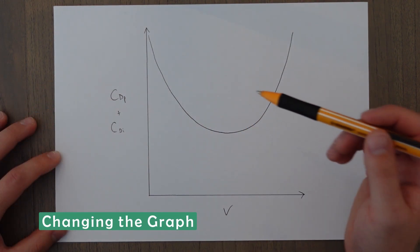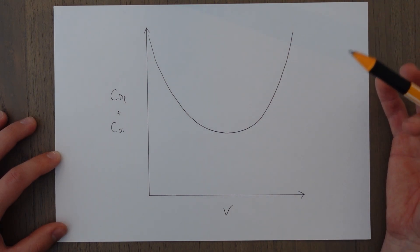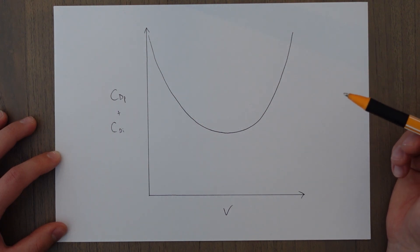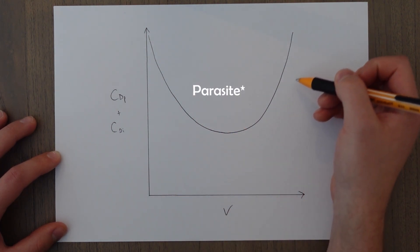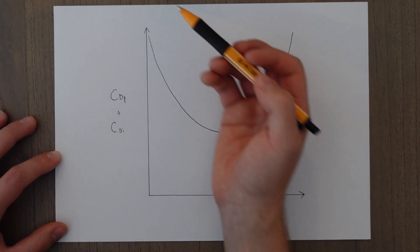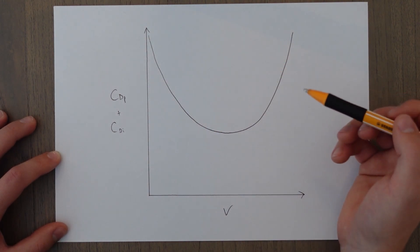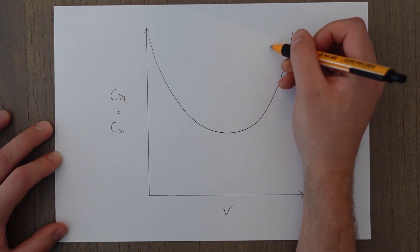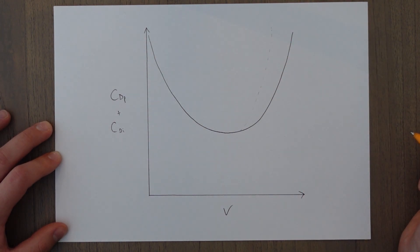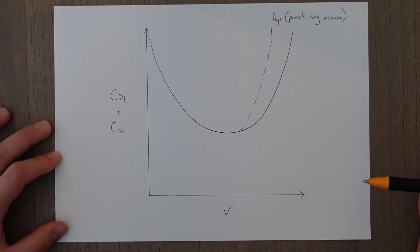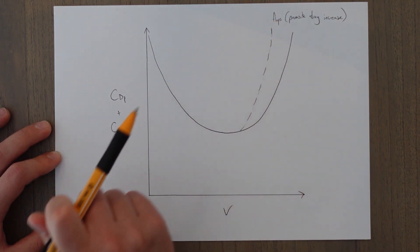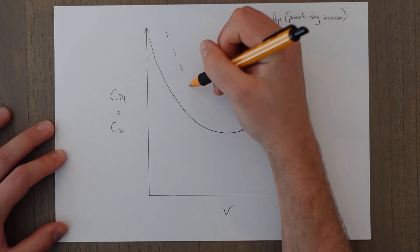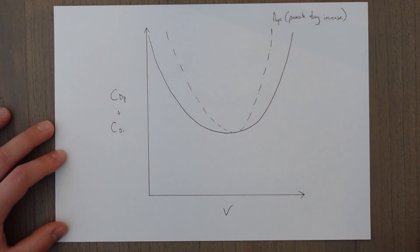There are a few factors that affect the total drag curve, some of which we saw before in the individual parasite and induced drag graphs. The total drag graph is essentially a projection of those factors. Increasing form drag — which varies directly with V squared — pushes the graph up and to the left, so the total drag curve would pop up much sooner. Increasing the weight of an aircraft moves the induced drag curve up and to the right, influencing the total drag curve to come down much greater than the original line.